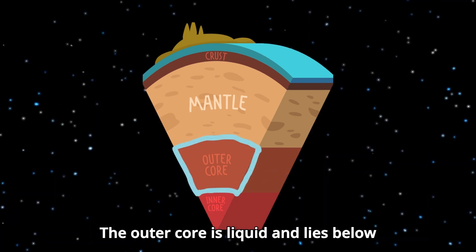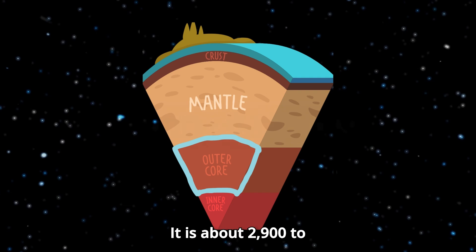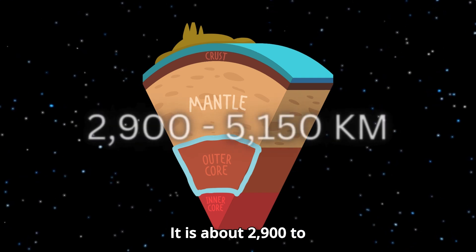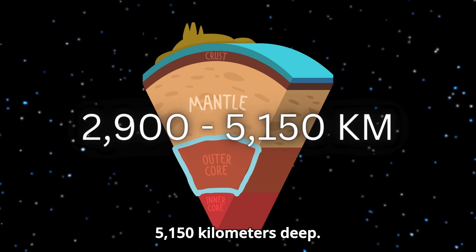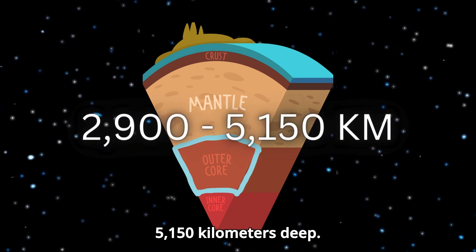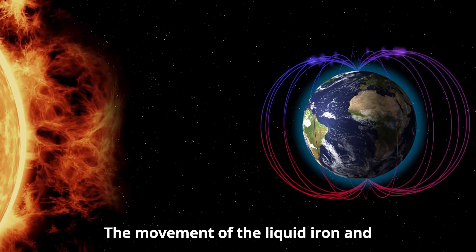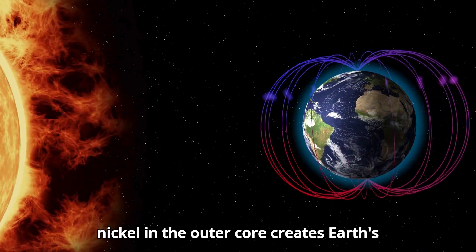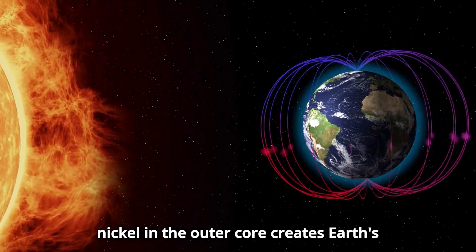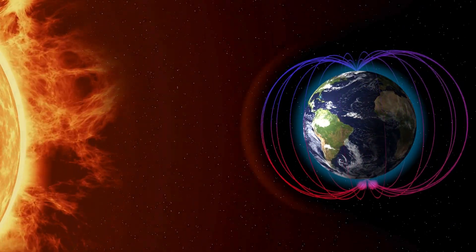The outer core is liquid and lies below the mantle. It is about 2,900 to 5,150 kilometers deep. The movement of the liquid iron and nickel in the outer core creates Earth's magnetic field.